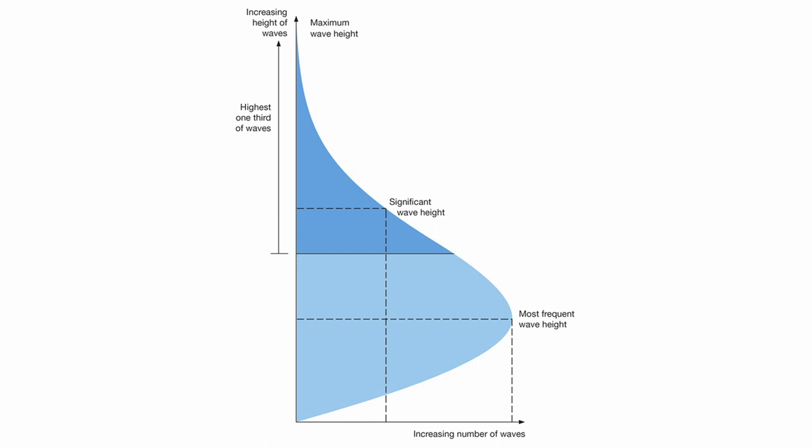To understand exactly what it means, you need to understand what they mean by significant wave height and how it's calculated. This graph from the Bureau of Meteorology shows the distribution of wave heights. The bulk of the curve is below the significant wave height. The definition of significant wave height is the average height of the highest one-third of waves. So one-sixth of waves will be higher than the significant wave height, and two-thirds of waves will be much lower.